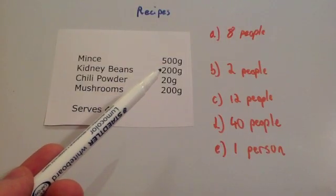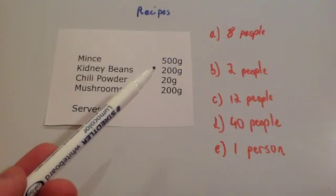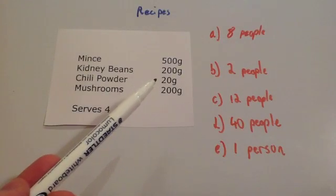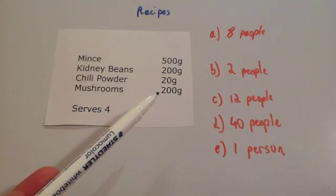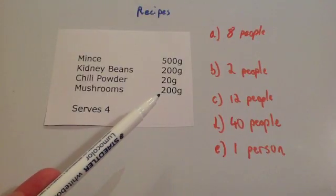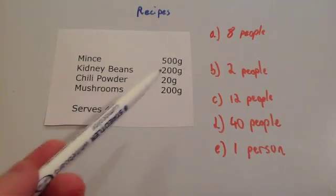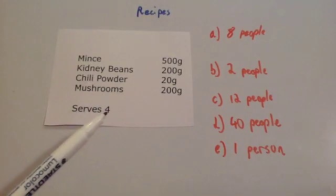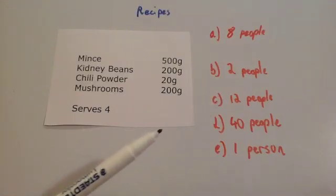Instead of 200 grams of kidney beans, you're going to use 600 grams of kidney beans, because you just times it by three. Instead of 20 grams of chili powder, you'll need 60 grams of chili powder. Instead of 200 grams of mushrooms, you're going to need 600 grams of mushrooms. Just times all of them by three, because instead of four people, it's for 12 people.